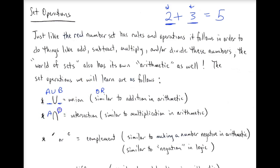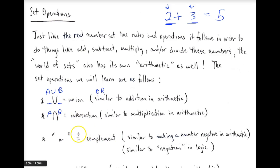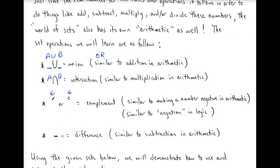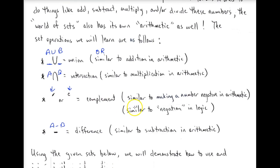Similar to that, we have the intersection, which uses the upside-down symbol, and that's similar to multiplication. We want to know what's in common with both sets. For the complement — which is basically what is outside of a set — we use either the bar symbol or the letter C written where you would write an exponent. And the difference: if we had A minus B, we understand that to be everything that is in A but not in B.